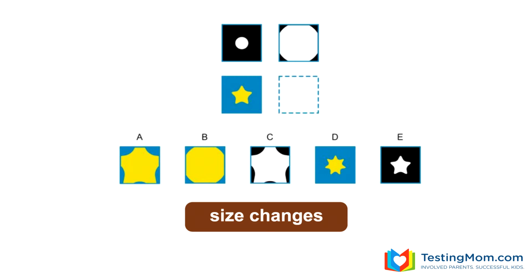Here the rule is that the circle on top goes from small to large. If we apply the same rule on the bottom, the star would go from small to large. A is the answer.